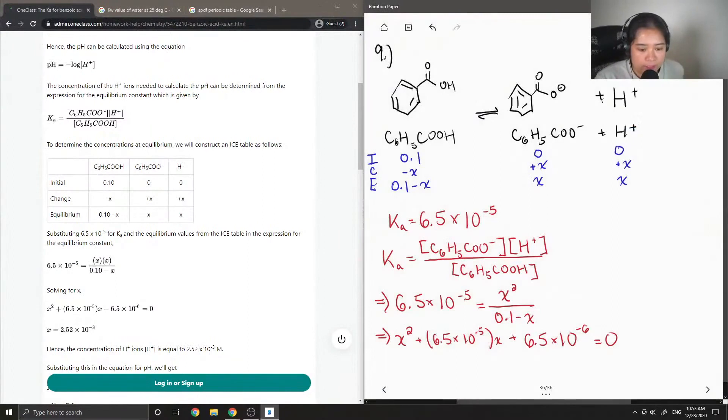In order to solve for X, we can either plug it in to a quadratic equation calculator, or you can do it by hand if you memorized it from high school. But you'll end up getting an X value. And we want to look at the positive value since we can't have a negative concentration. So X will end up being equal to 2.52 times 10 to the negative 3.